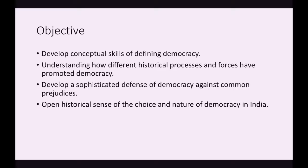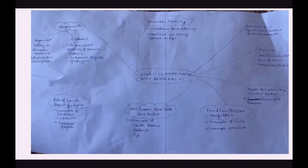We'll see how democracy is the best form of government till date, and we'll also see the historical sense of the choice and nature of democracy in India — how democracy has been working in India and how it changed after British rule. This mind map gives an overview of the entire chapter.